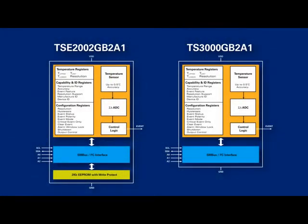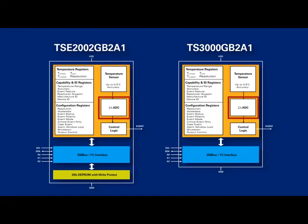Looking at the block diagrams for each part, they look very similar. The real difference between the TSC-2002 and the TSC-3000 is that the 2002 has an additional 256 bytes of EEPROM called the serial presence detect. Other than that, all blocks are common between the two: an analog temperature sensor that senses local air temperature, a sigma-delta converter that converts the analog signal to a 12-bit digital signal, a register space that is industry-standard and defined by JEDEC JC42, and the SMBUS and I2C interface.